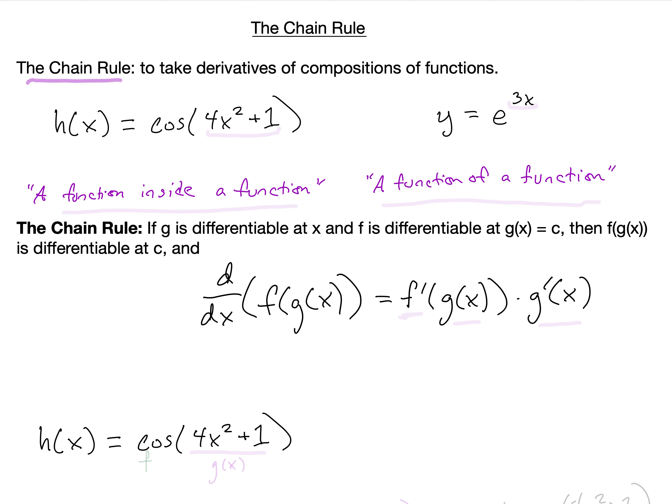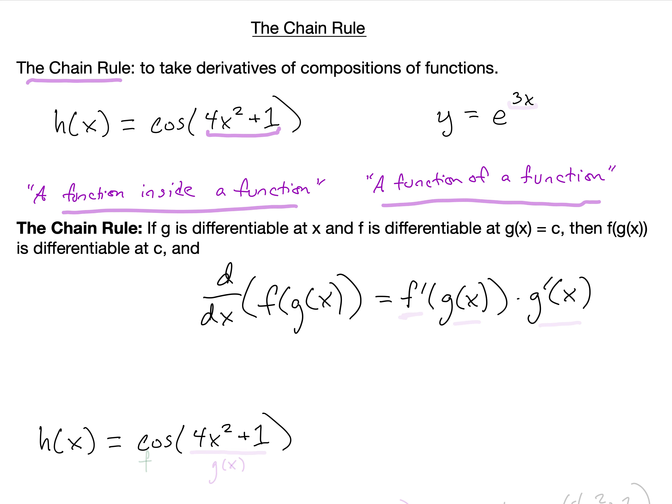The chain rule is useful if you need to take the derivative of a composition of functions — a situation where we have a function inside of a function. So both examples h of x and y are such examples. We have cosine of 4x squared plus 1, where the function 4x squared plus 1 is inside the function cosine of x. And in our second example, we have y equals e to the 3x, where we have a little function 3 times x inside of another function, e to the something.